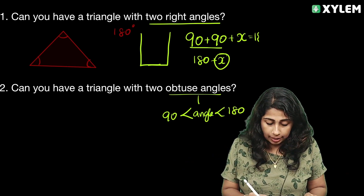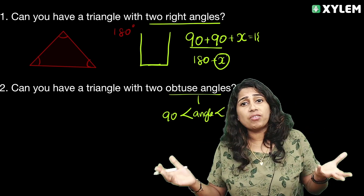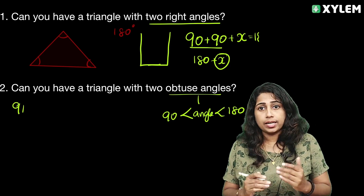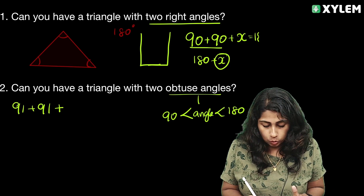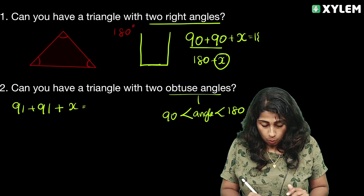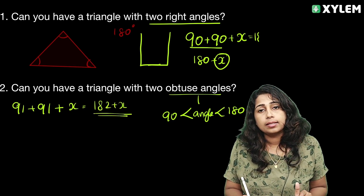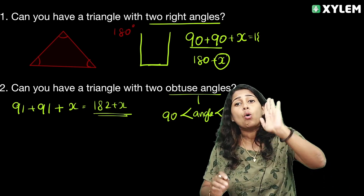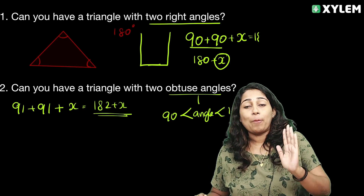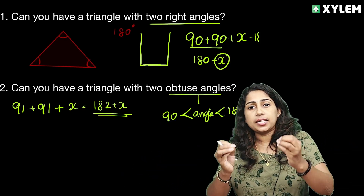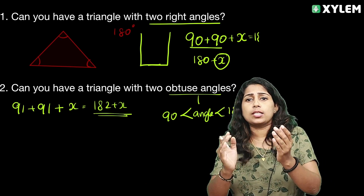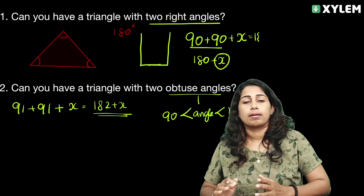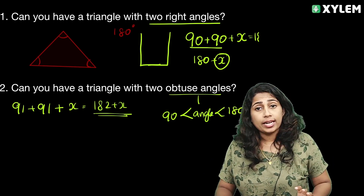If we have two obtuse angles, the minimum value each can take is 91 degrees. So 91 plus 91 equals 182. The angle sum is already 182, which is greater than 180. Therefore, a triangle with two obtuse angles is not possible — the angle sum property is not satisfied.